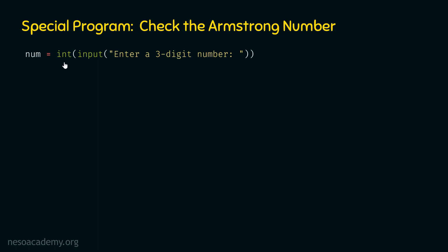We need a sum variable initialized to zero, because we eventually need to calculate the sum of all digits raised to the power n. After the calculation, we check whether num equals sum. If num equals sum, the number is an Armstrong number. The logic is pretty simple — we need a while loop.